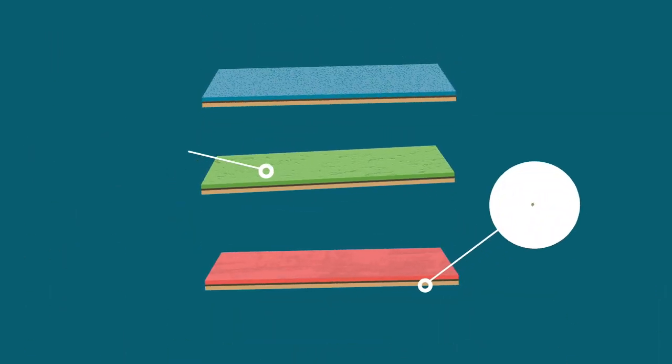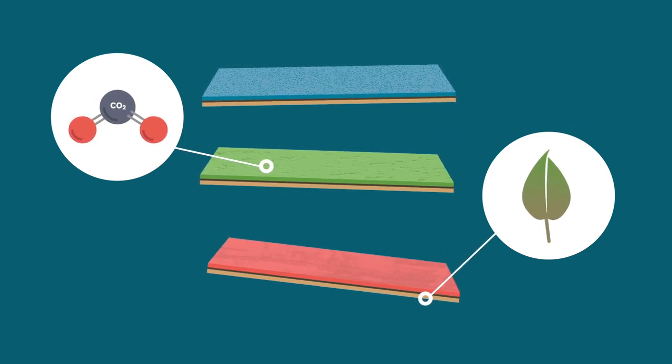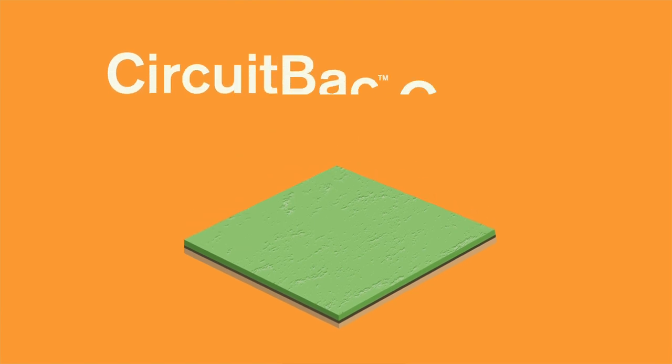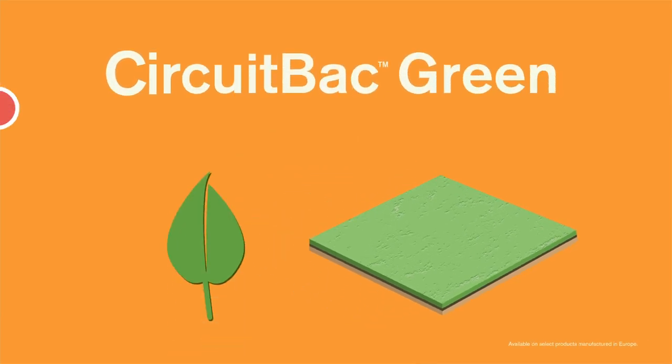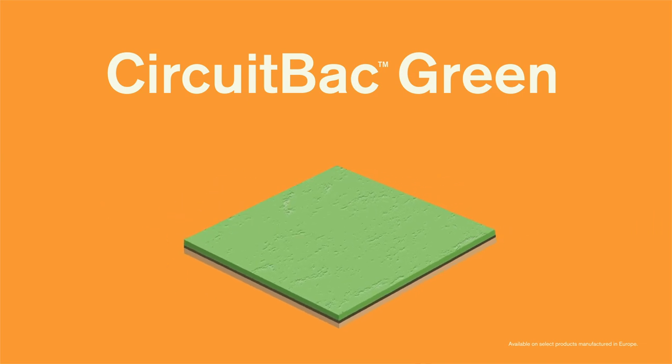We're actively exploring raw materials that absorb carbon from the atmosphere, and using them to make our products. Take Circuit-Back Green. Initially launched in Europe, our Circuit-Back Green backing absorbs more carbon than it emits during production, making it carbon negative.